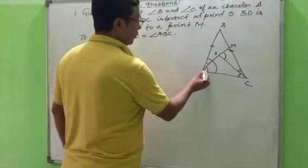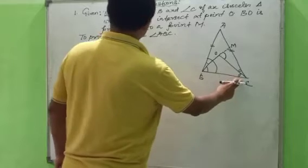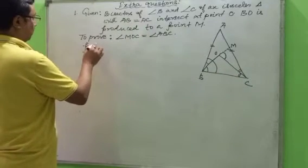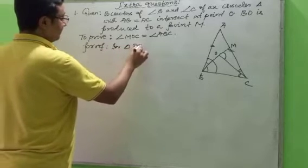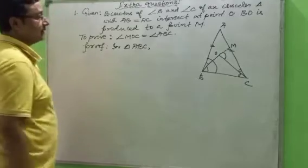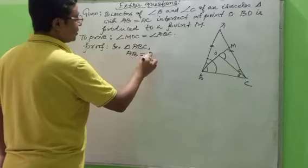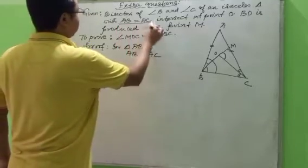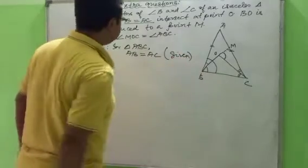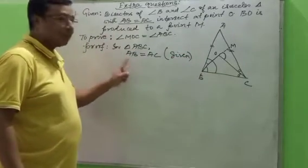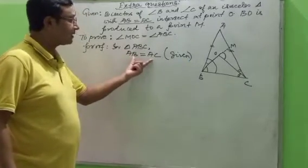So first we will take triangle ABC. In triangle ABC, it is given that AB equals to AC. You know that the sides opposite to the equal angles are always equal — so here the opposite angles are equal.